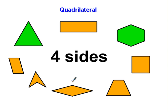Quadrilaterals are shapes with exactly four sides. A triangle is a shape with exactly three sides. This is a triangle, it's not a quadrilateral.